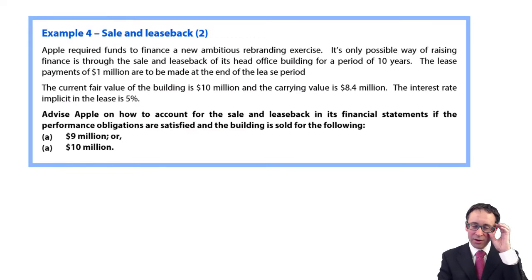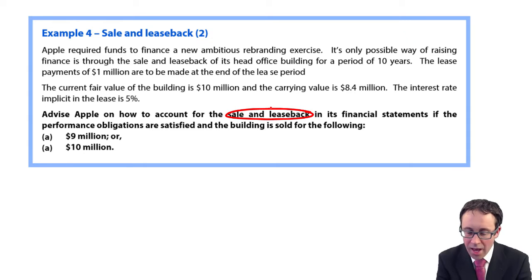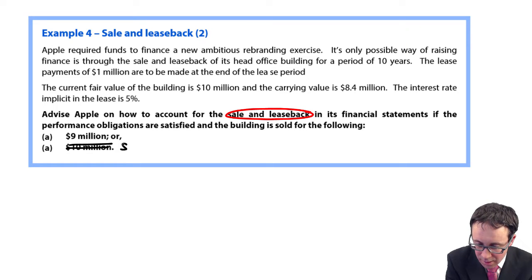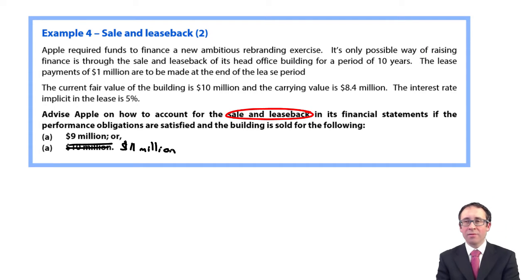Let's go through and have a look at the example for sale and leaseback. What you see here is that it's the same scenario. I've tried to keep it as simple as possible, which is difficult because it's a complex transaction. But what you've got there is we need to account for the sale and leaseback. In the first bit, it's there at 9 million, and then the second part, it's there at 11 million.